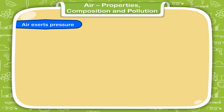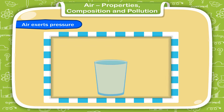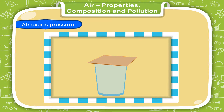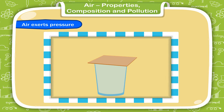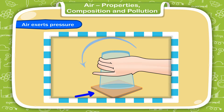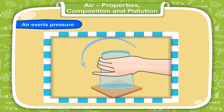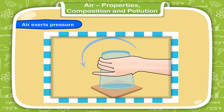Air exerts pressure. To prove that air exerts pressure, take a glass full of water up to the brim. Cover the glass with a thin, smooth piece of cardboard in such a way that there exists no air in between the water and cardboard. Hold the cardboard with one hand and turn the glass upside down as shown here. Remove your hand from the cardboard. The water and cardboard do not fall down because air exerts pressure on the cardboard to keep it fixed in its place. This shows that air exerts pressure.